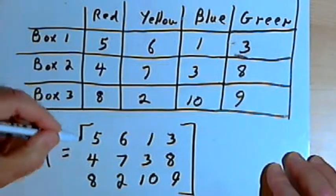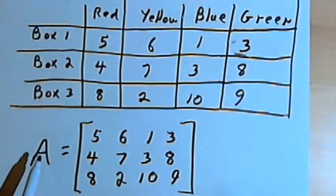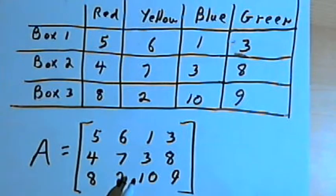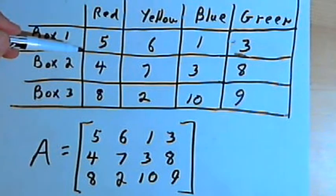We usually put square brackets around a matrix. And now what I've got is a matrix representation of the information that was in that original table.